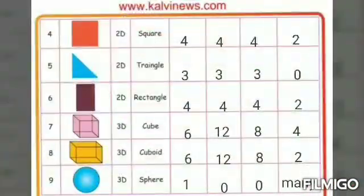Next, square. Square is also a 2D shape. It has 4 sides, 4 edges, 4 corners and 2 diagonals.